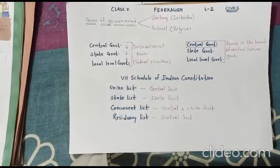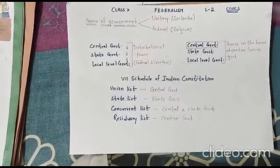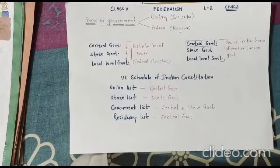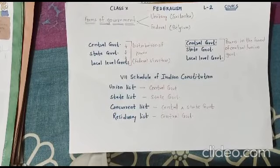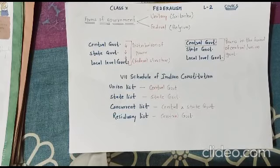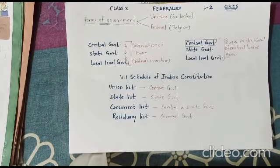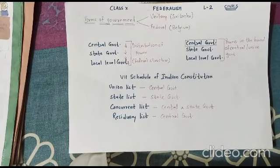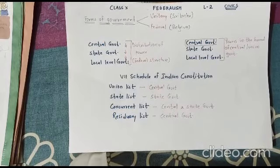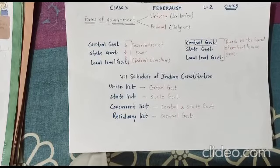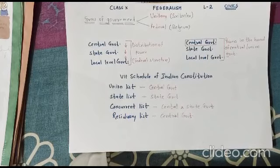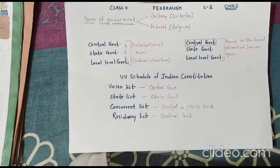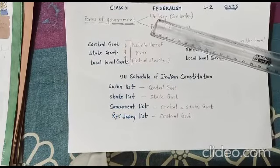If you remember, in lesson 1 we talked about two different countries — Sri Lanka and Belgium. In Belgium, the government came out with a very innovative mechanism and introduced a third level of government called the community government. It gave equal powers to all communities so they don't feel alienated, and it tried to accommodate diversity through distribution of power. In Sri Lanka, the government was not ready to distribute power, making people feel alienated.